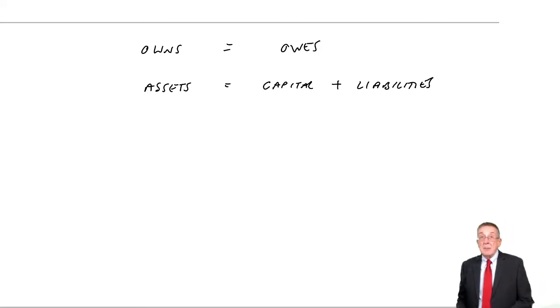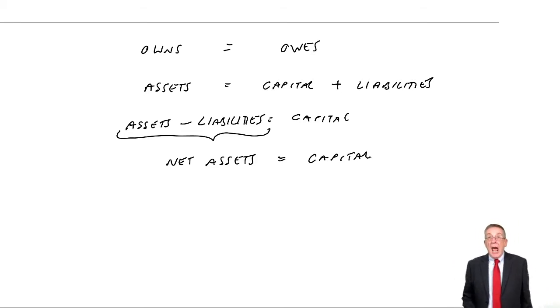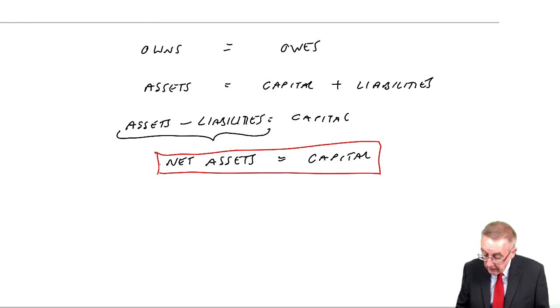I can rearrange that slightly differently if you subtract liabilities from both sides. The assets minus the liabilities, at any point in time, will equal the capital. In that first example I went through, although everything kept changing, every time we did a statement, the assets equal the capital plus the liabilities. Well, one more bit of terminology. Another word for assets minus liabilities is the net assets. And so there is the first of our accounting equations, that always, at any point in time, the net assets of the business will equal the total owed to the owner, the capital.